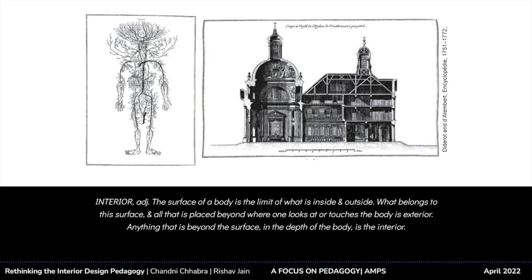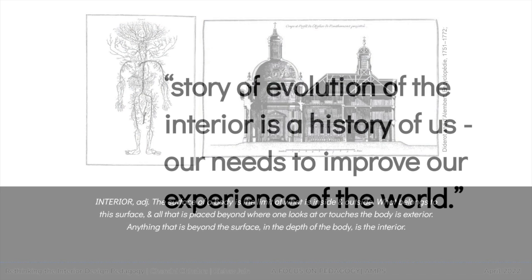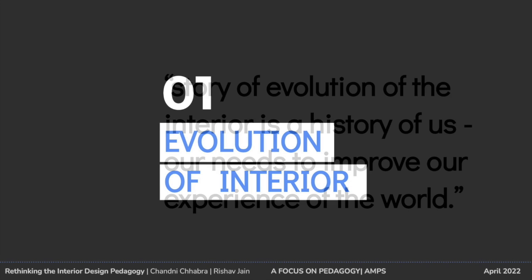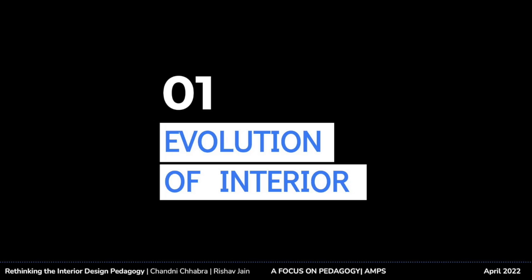Let me begin with an interesting perspective on interior written by French philosopher Denis Diderot, who is known for his work Encyclopedia, written in 1751. Diderot's definition of interior offers two readings: first, everything inside the human body, and second, anything contained and separated as an enclosure from the exterior world, like the insides of a building. Interestingly, Shashi Khan also in her book Rethinking Design and Interior shares that what we call interior today started as an extension of self, an extension of a body.